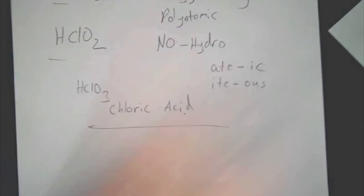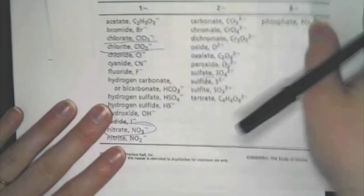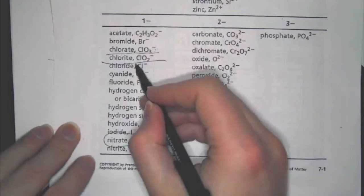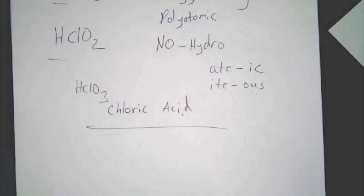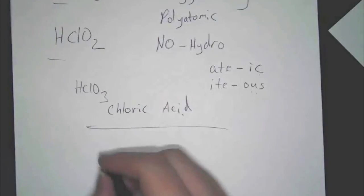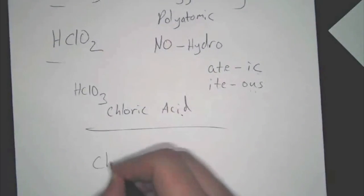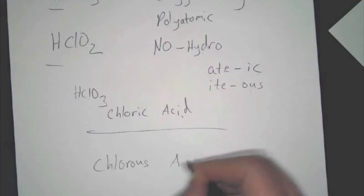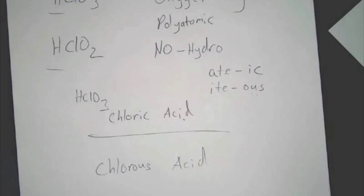The second one, ClO2, if you look, is chlorite. So, what are we going to call ClO2? Chlorous acid, yes. So, chlorous acid.